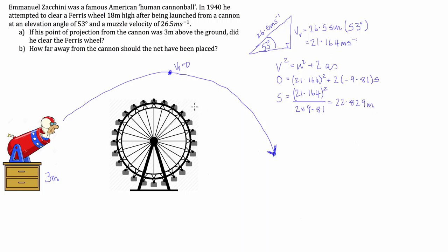Now you'll say, but wait, he's already 3 meters off the ground. You are correct. So what we have to do is his maximum height is going to be the number we just got, 22.829 meters, plus the 3 that he started with.